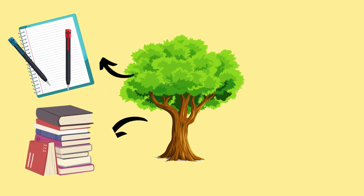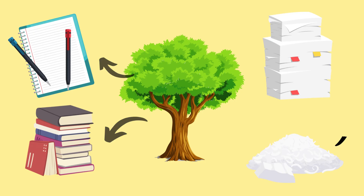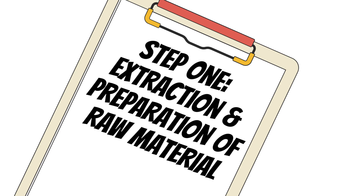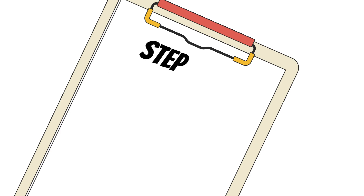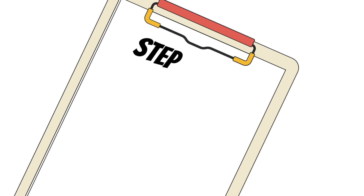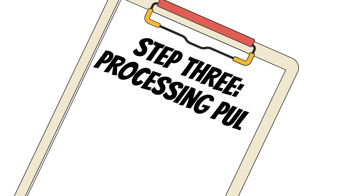Generally, the paper you write on and the books you read every day are made from trees, because paper tends to be made from the pulp of wood. The manufacturing process looks something like: Step 1 — Extraction and preparation of raw material. Step 2 — Preparation of pulp. And Step 3 — Processing of pulp and paper production.